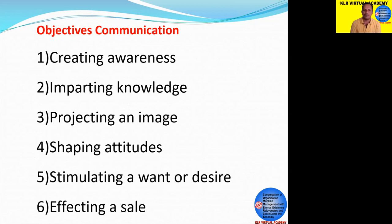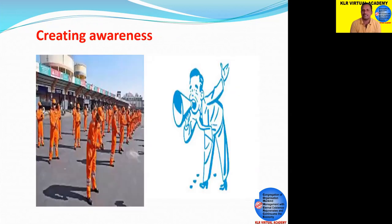There are six categories of communication objectives. If you understand these objectives, you will be in a position to use the right mechanism to fulfill them. The first objective is creating awareness. Many kinds of communication processes going on in the world are for the purpose of creating awareness — through words, language, actions, body language, performances, and demonstrations.